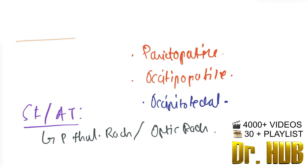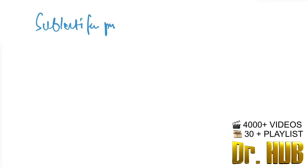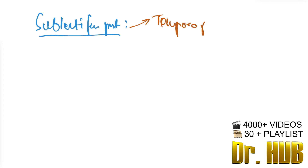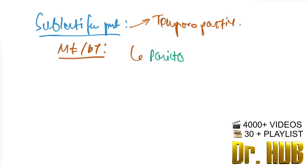Finally, under the sub-lentiform part, the motor fibers of the descending tracts include the temporopontine and paritopontine. The sensory fibers of the ascending tracts include the auditory radiation.